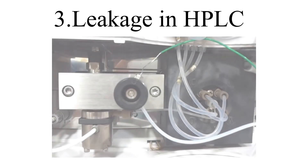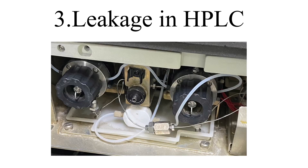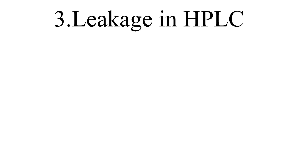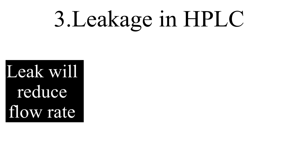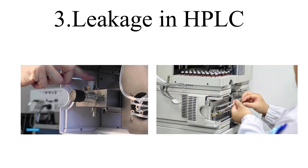Number 3: Leakage in the HPLC system. A leak in the HPLC system can cause retention time variation. If peak retention time has increased over a period of time, one possible reason could be a leak. Generally, flow rate will reduce due to a leak, causing longer retention time of the analyte peak. Always be alert to this pattern of change and check for any kind of leakage in the HPLC system.